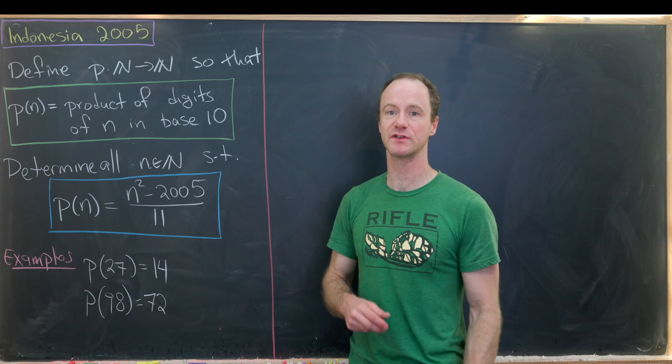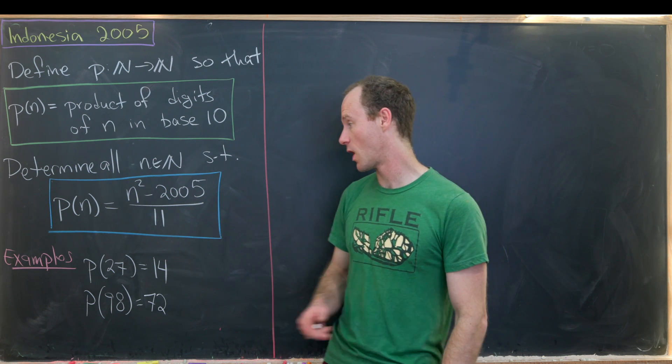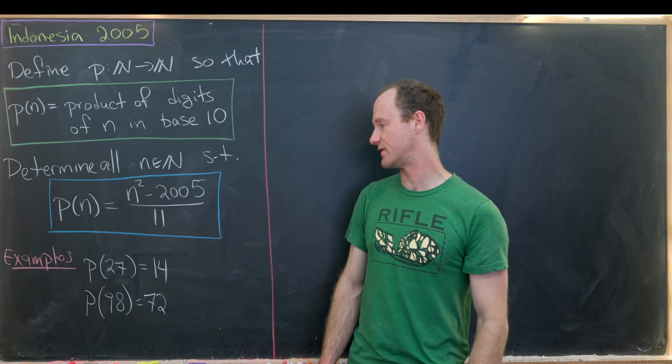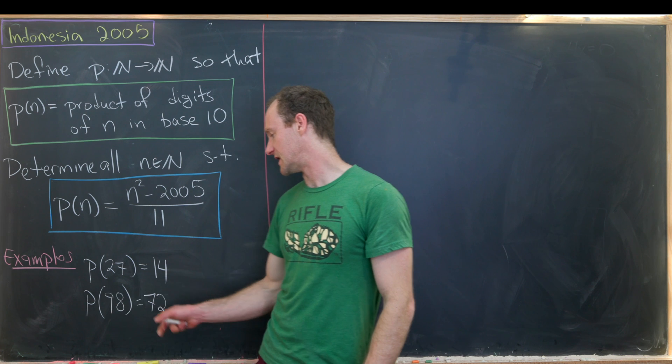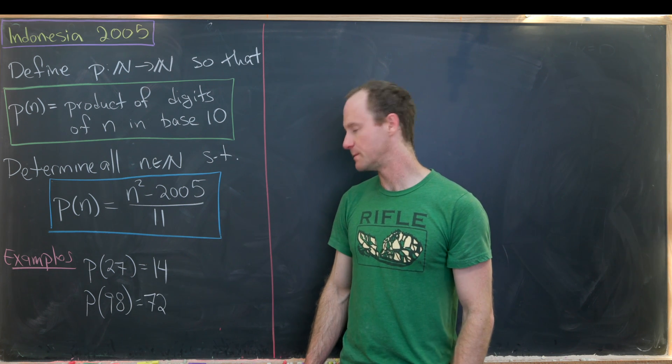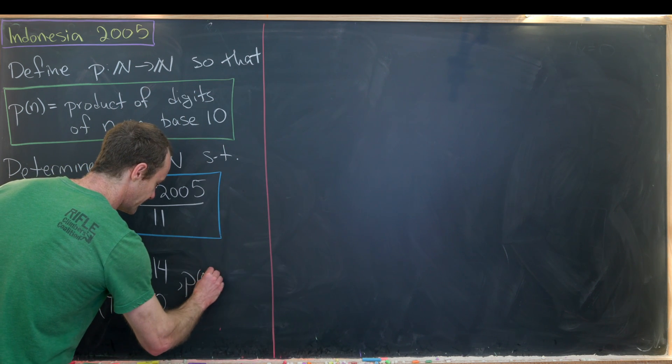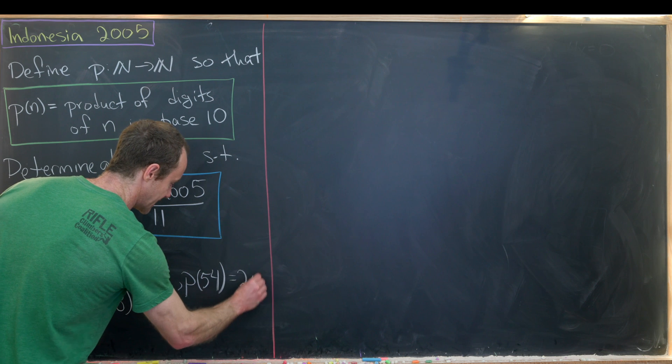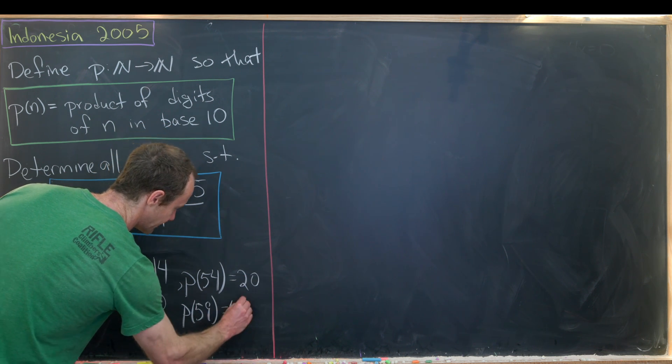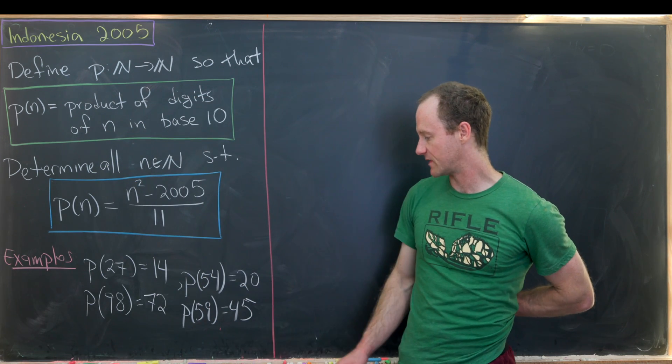And just some quick examples although you might want to write down a couple of more examples to see if there's some sort of pattern. p of 27 is 14. That's because 2 times 7 is 14. p of 98 is 72. That's because 9 times 8 is 72. I guess we could do one more if we wanted to. So maybe p of 54 is equal to 20. And then p of 59 is equal to 45. That's because 4 times 5 is 20 and 5 times 9 is 45.